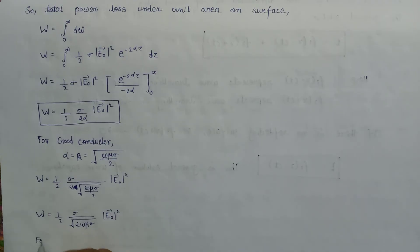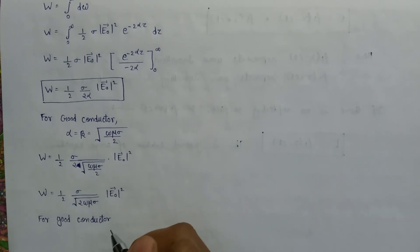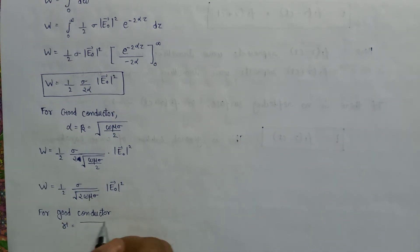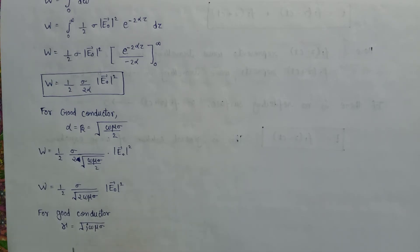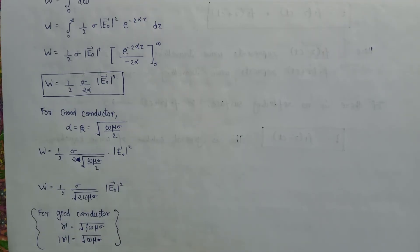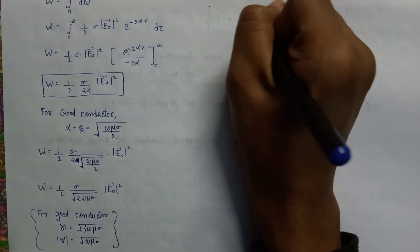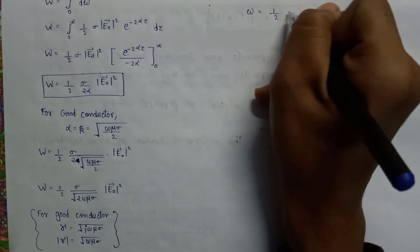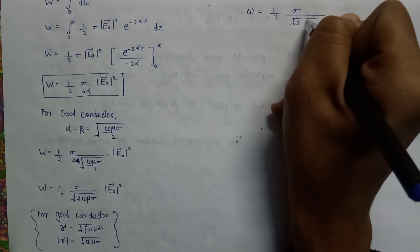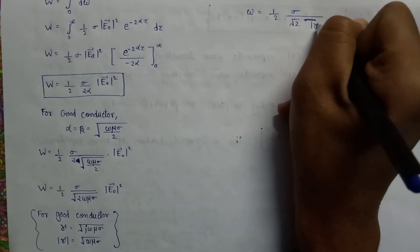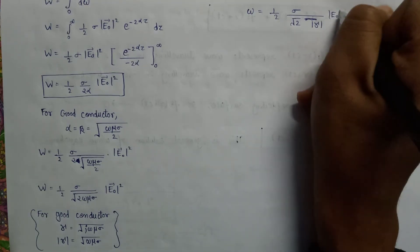So if we replace omega mu sigma with the modulus of gamma, then W becomes one-half multiplied by sigma over the square root of 2, times the modulus of gamma, times E0 squared. We also know that the conduction current density, which is also the surface current, is given as J equals sigma over gamma times E0 in the x-cap direction, showing the direction of the electric field.